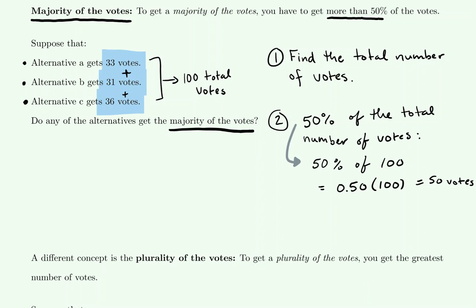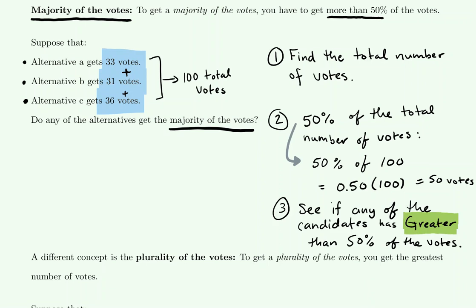To find the percentage of a number, move the decimal place over two times to the left and multiply by the number in question. We intuitively know that 50 percent of 100 is 50 votes, so we'll know if anybody has a majority if anybody exceeds that value. A candidate would need more than 50 votes. Looking at the results, all the votes are in the 30s, so the answer is no — none of the alternatives gets a majority of the votes.